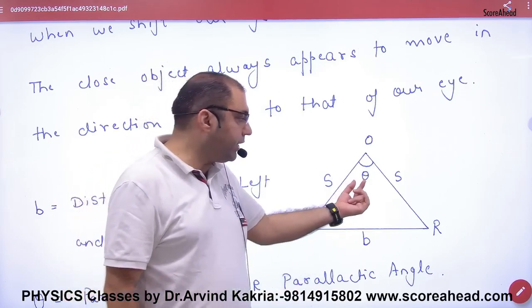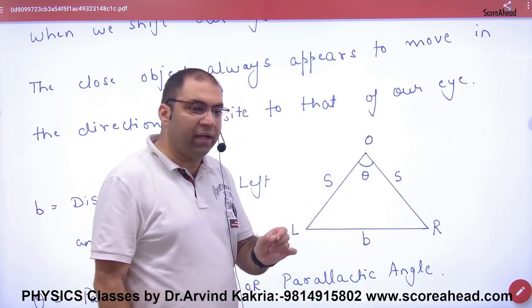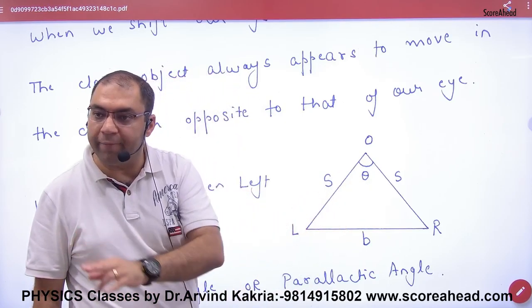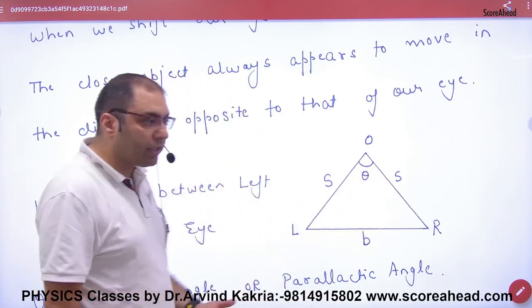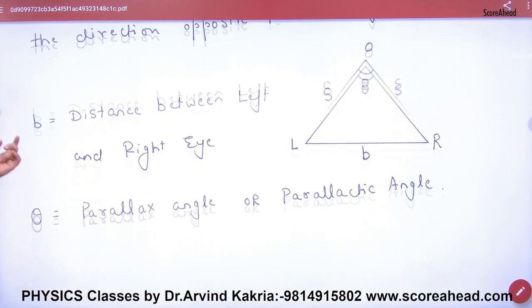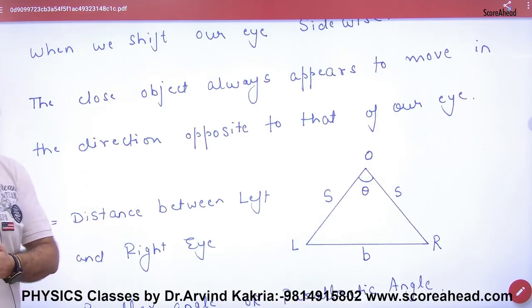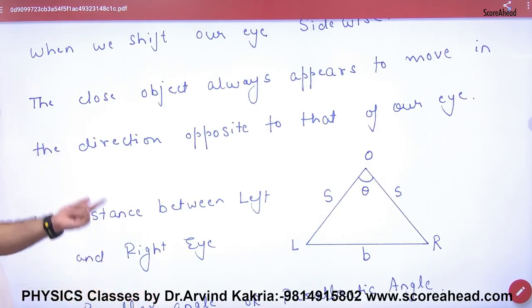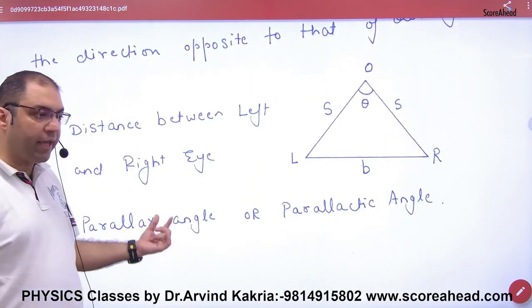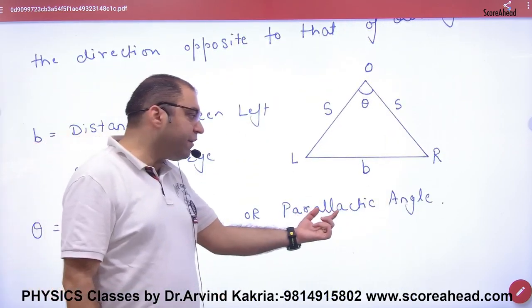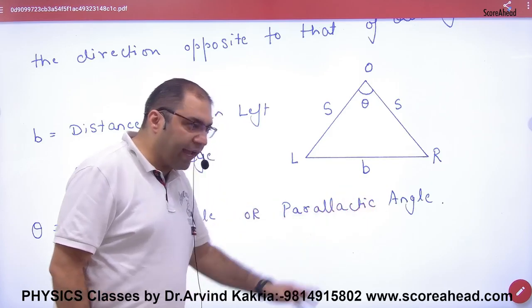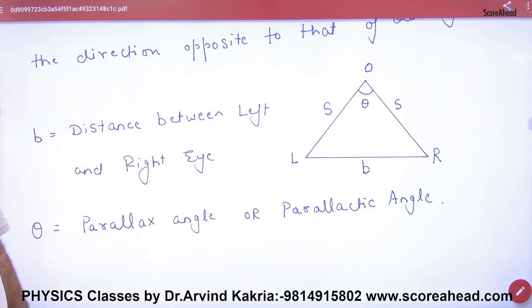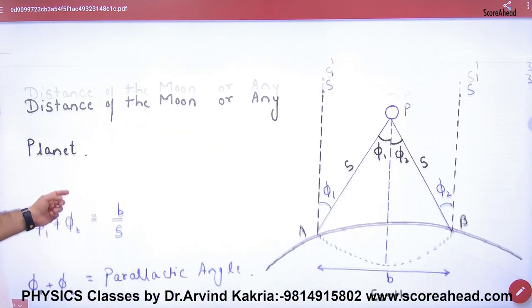S and S, and this is theta. So you will see angle is arc by radius, so angle theta is r by radius, and the radius is S. So here you can calculate S. This angle theta is called the parallax angle or parallactic angle. This is the parallax method.